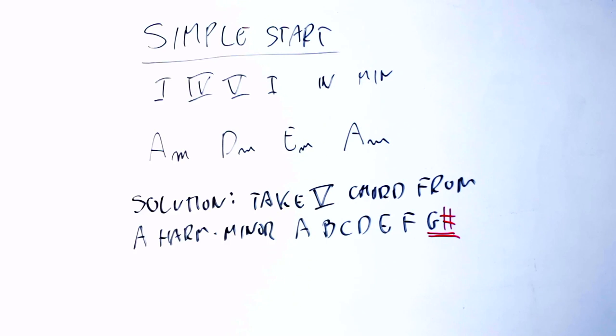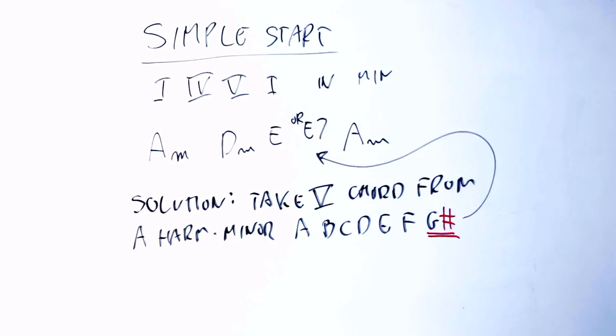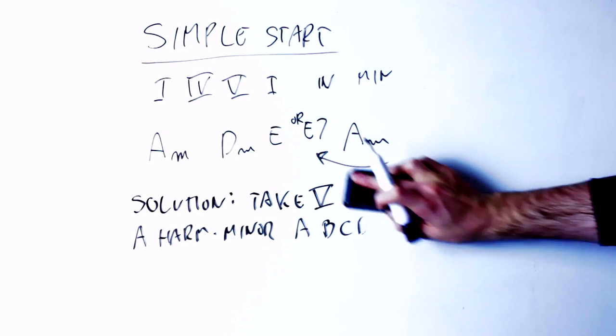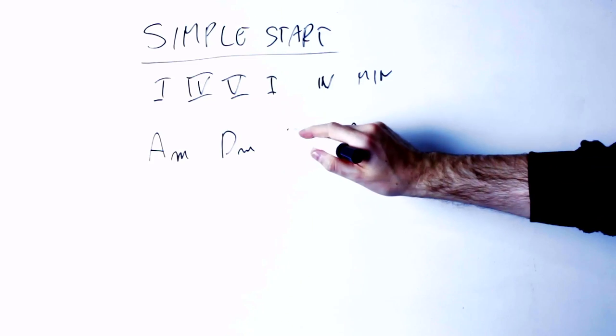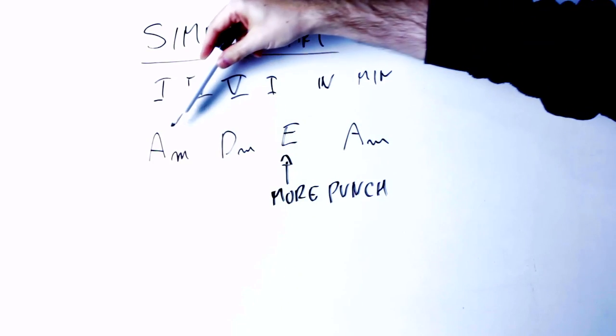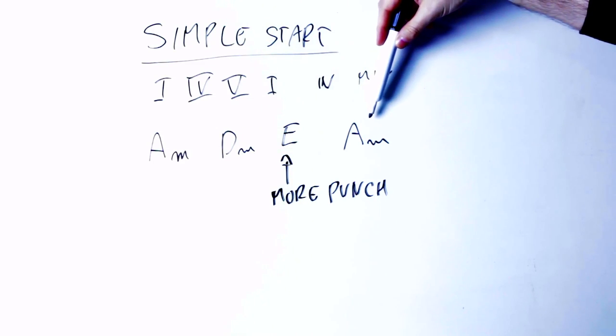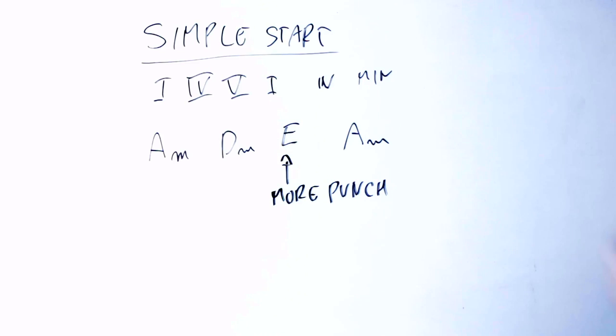But in the harmonic minor we sharp, we raise the last note of the scale, which is G, and we take it to a G sharp. So now the fifth chord is not E minor E, G, B anymore. It's E major E, G sharp B, and sometimes in fact we use the E dominant seventh chord E, G sharp B, D. This gives much more punch to the resolution.